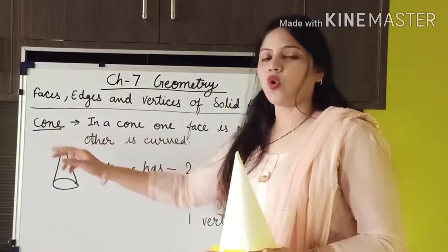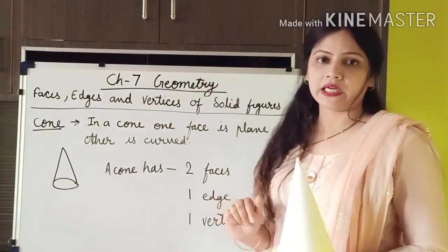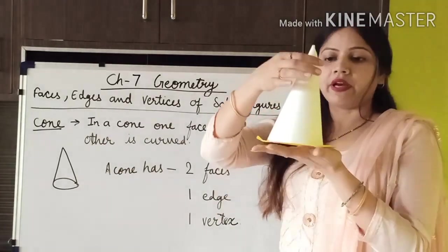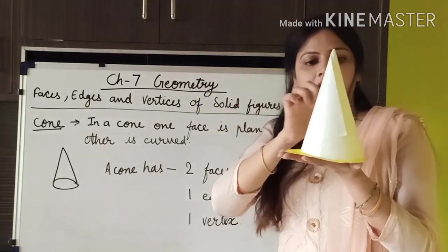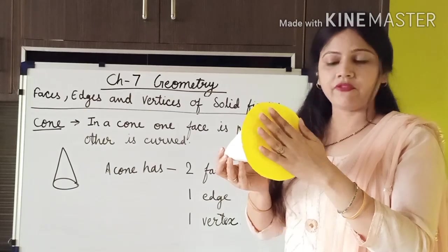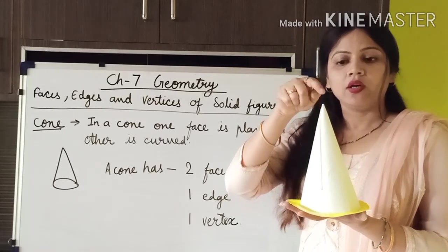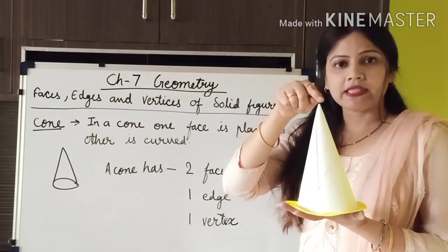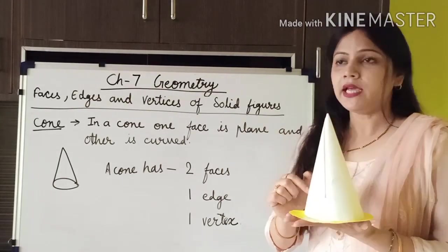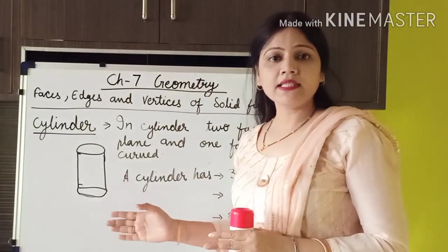The fourth type of solid shape is cone. It has one plain face and one curved face. As you can see, the side is a curved face — wherever you will see, it is curved only. And the bottom is a plain face. So it has one plain face and one curved face. It has one vertex — corner is called vertex. And it has one edge. Just pause this and write these things in your maths copy.